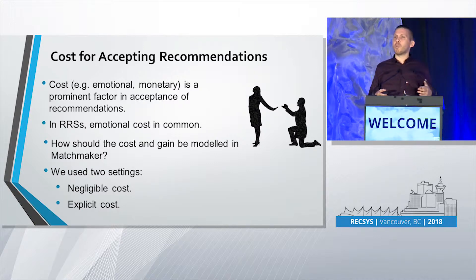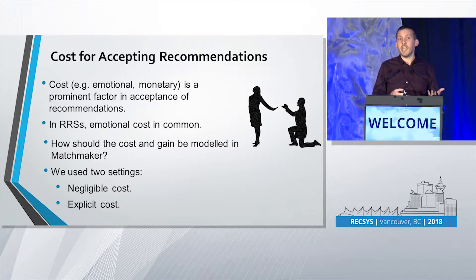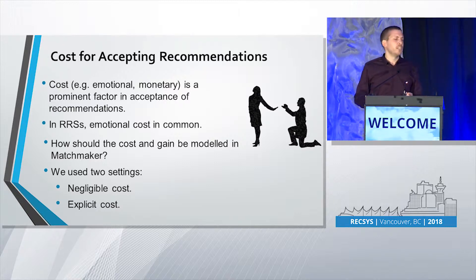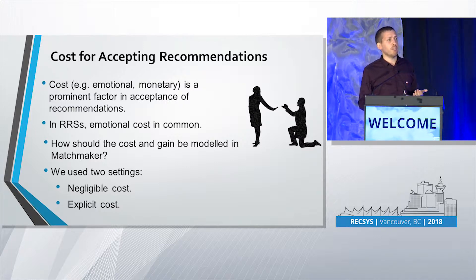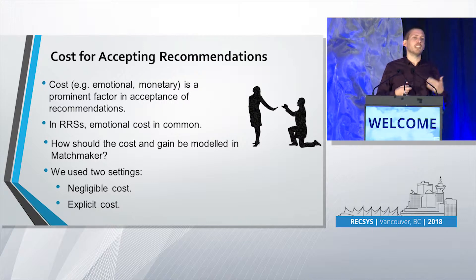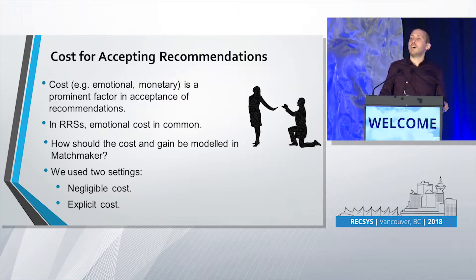A problem we encountered when we built Matchmaker is that it's very hard to simulate a very important factor in acceptance of recommendations — the cost and gain involved in accepting a recommendation. In a reciprocal recommendation site, emotional cost is common and very prominent, mainly due to the fear of rejection — accepting the recommendation, sending a message, and being rejected by the other side. This is also common not only in online dating sites but also in other reciprocal recommendation systems, like job recruiting platforms. So when we built Matchmaker, we wanted to somehow simulate this emotional cost.